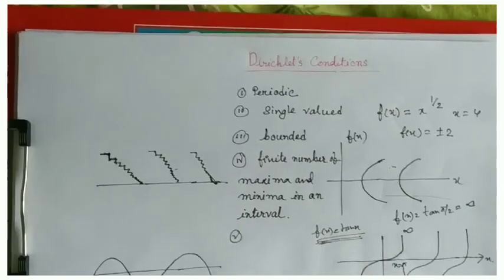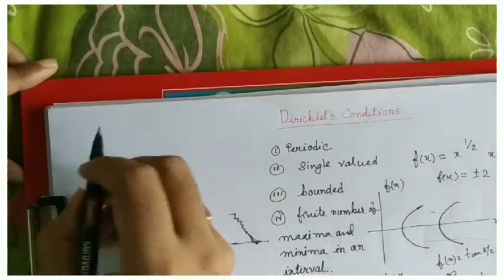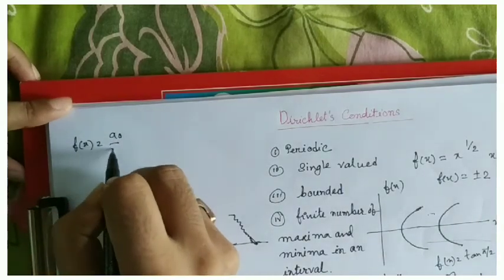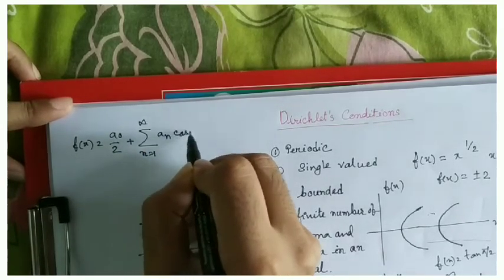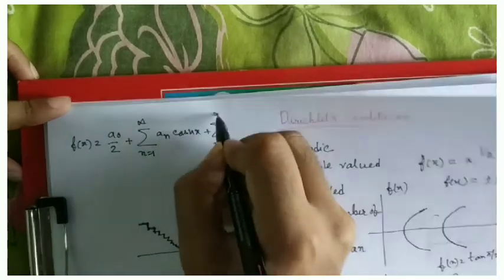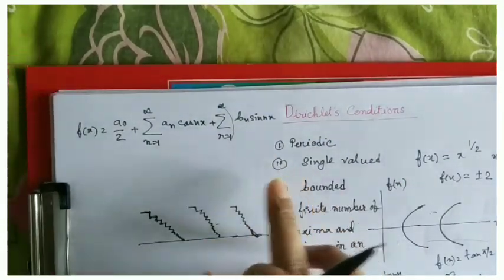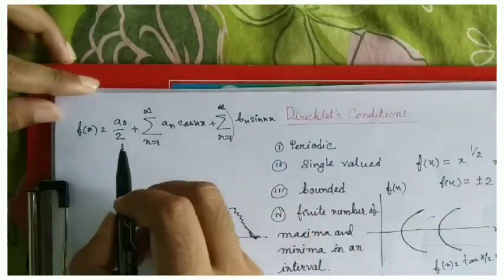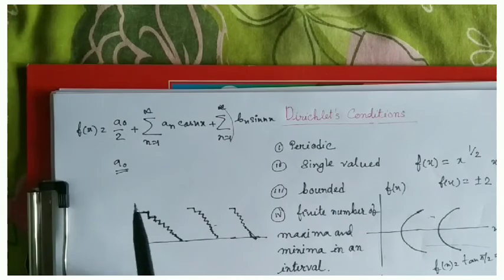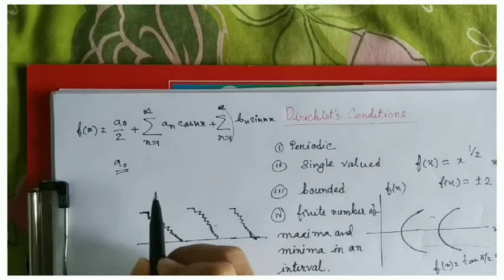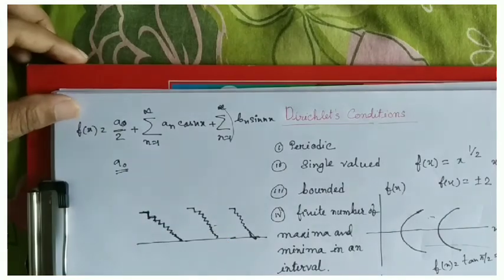Now, another thing is that we have to find the Fourier coefficients. What we can write for Fourier expansion is: f(x) = a₀/2 + ... This is the general formula for Fourier expansion. In some textbooks you may find that the term is written as just a₀ without dividing by 2 — I will explain why the 2 is included when we derive these coefficients. This a₀ is called the DC component.